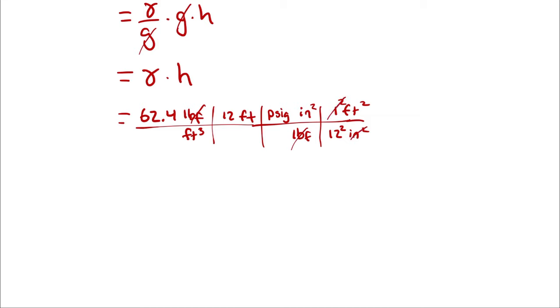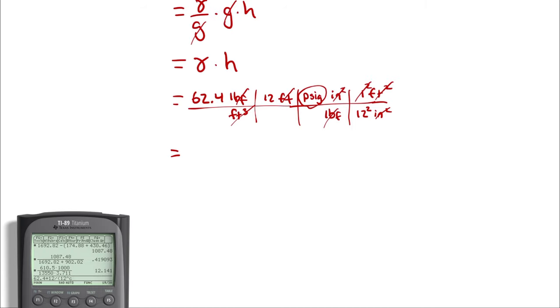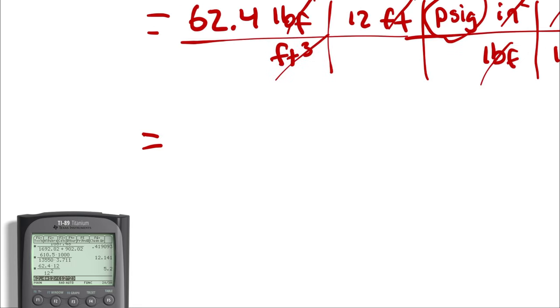Inches squared cancels inches squared. Feet squared and feet cancel cubic feet, giving me PSI. So I will take 62.4 multiplied by 12 divided by 12 squared. So the gauge pressure at the bottom of the swimming pool is 5.2 PSI.